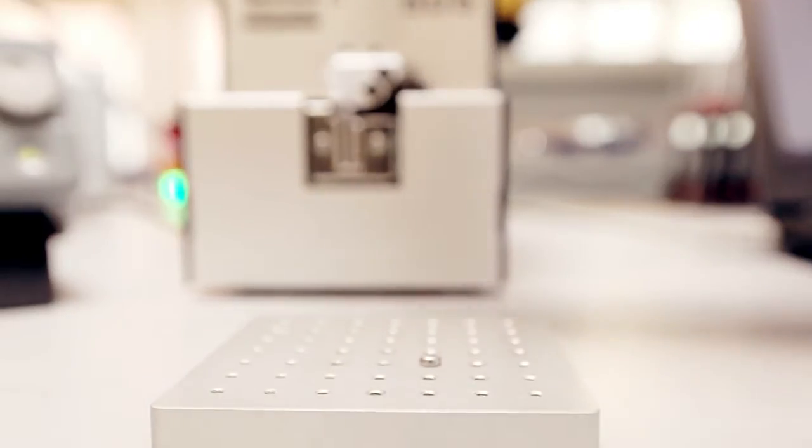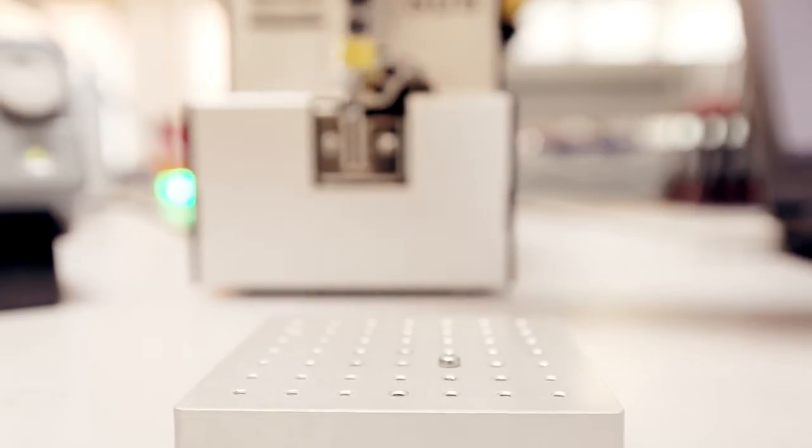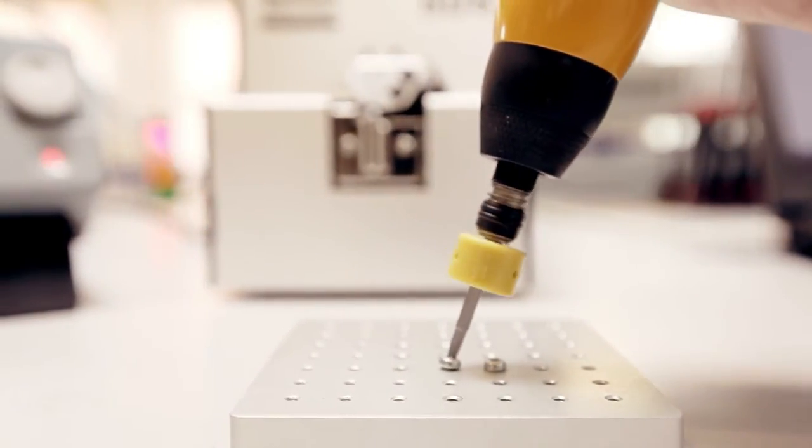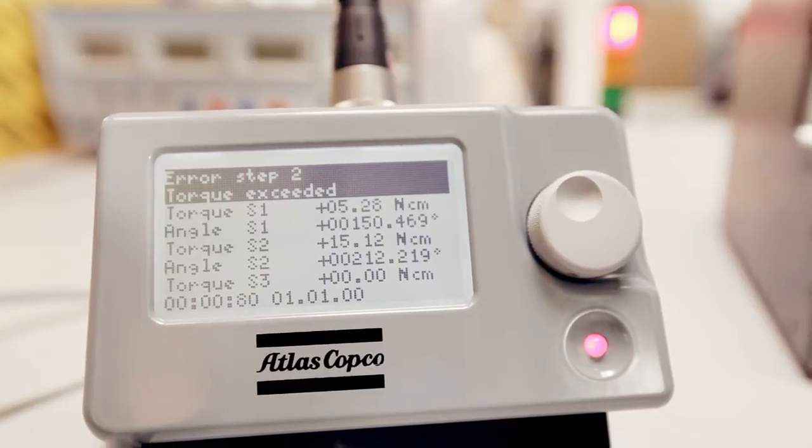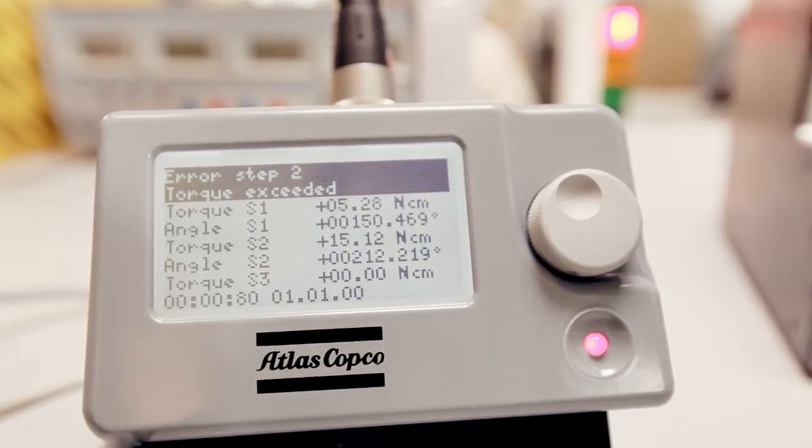A misaligned screw, a so-called cross thread, is detected by the fact that the tightening will reach final torque before the joint is tightened correctly. Torque is exceeded and the angle is too low.